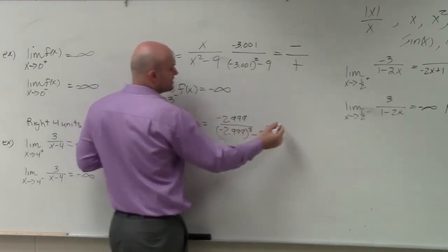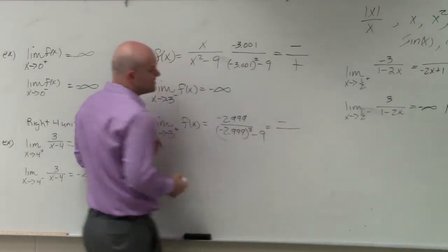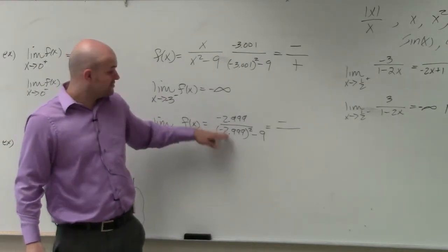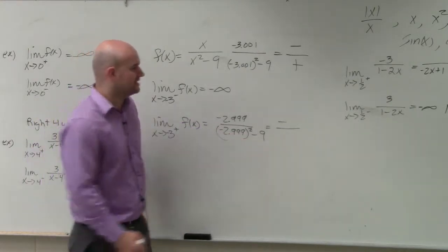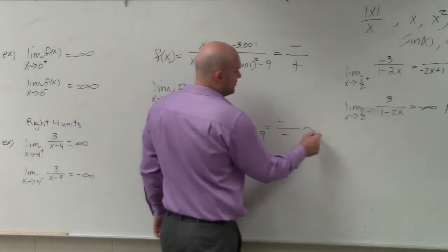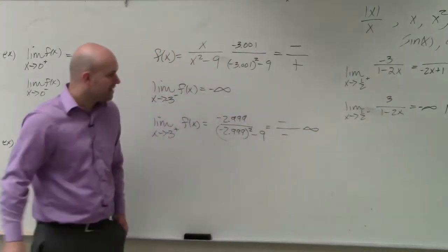Again, our numerator is negative. In our denominator, we have a number smaller than 3 squared. So a number smaller than negative 3 squared minus 9 is going to give us a negative, which will tell us it's going to go to positive infinity.